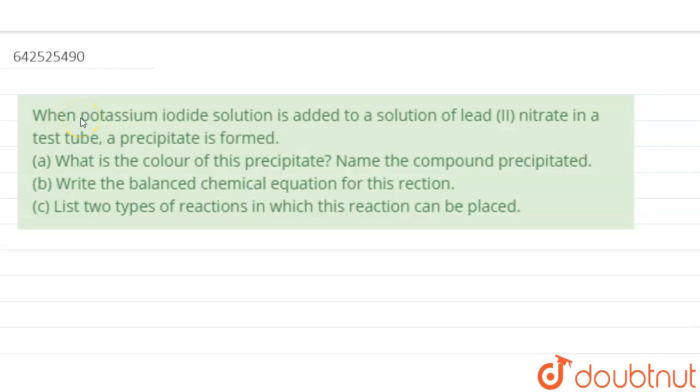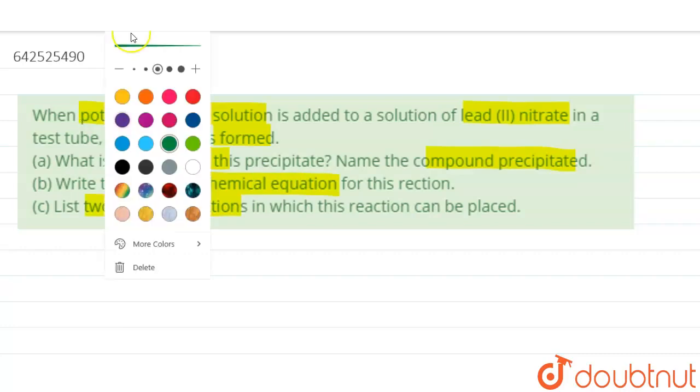When potassium iodide solution is added to a solution of lead nitrate in a test tube, a precipitate is formed. What's the color of the precipitate? Name the compound precipitated. Write the balanced chemical equation for this reaction. List two types of reaction under which this reaction can be categorized. So let's look over the answer of the question.